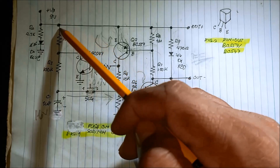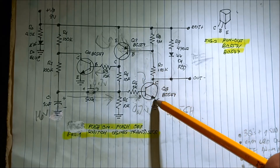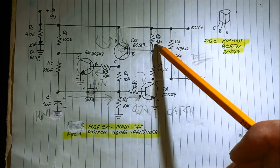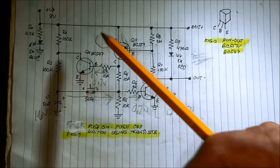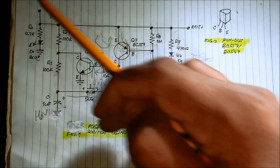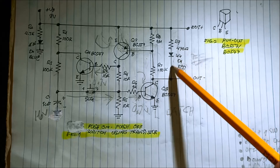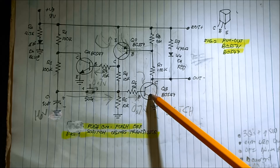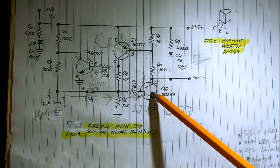Current now flows from emitter to base, then through 100k, then collector to emitter to ground. From 9 volts through 1 megaohm, 100k, collector to emitter to ground. Because of that, the LED also turns on — current flows from 9 volts through 470 ohms, through the LED, then collector to emitter to ground. This transistor now acts as a closed switch operating in saturation.